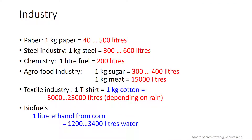Industry is also a huge consumer of water. Paper, steel production, fuel production, sugar, meat, the textile industry, and biofuels are all important consumers of water. To consume this water, they need structures to convey water to the industries.